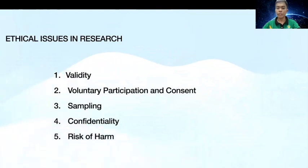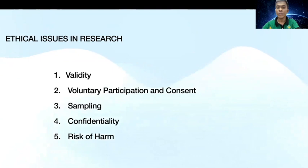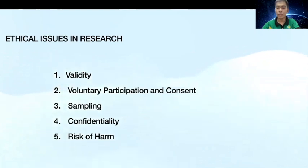As to voluntary participation and consent, an individual should at no point feel any coercion to participate in a study. This includes any type of persuasion or deception in attempting to gain an individual's trust. Informed consent states that an individual must give their explicit consent to participate in the study. You can think of a consent form as an agreement of trust between the researcher and the participants.